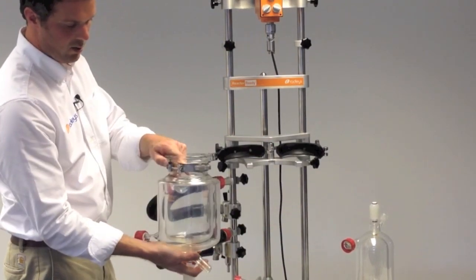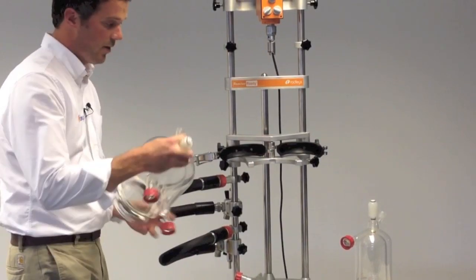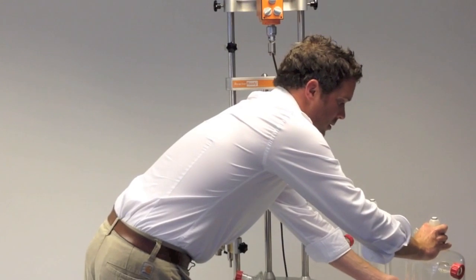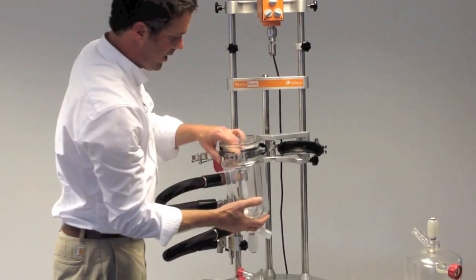The vessels are just hung with a stainless steel support collar that sits in the lugs on the reactor ready framework. I'll just drop in the one liter vessel.